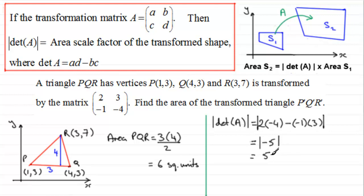So, we can finish this off by saying that, therefore, the area P'Q'R', the area of the new triangle, is going to equal the scale factor, which is 5, multiplied by the area of the original triangle, which was 6 units. So, 5 times 6 is going to give us 30. 30 square units. Okay? So, that is how you can use the determinant, then, as a measure of the area scale factor of the transform shape.